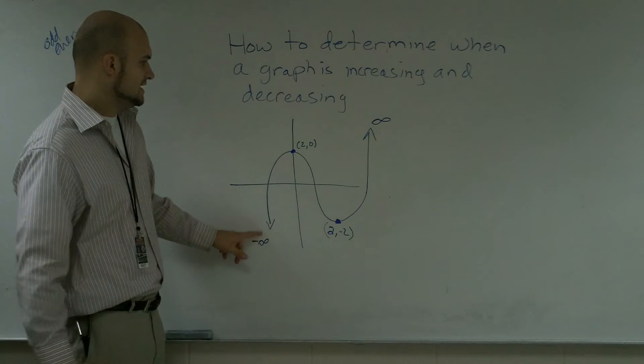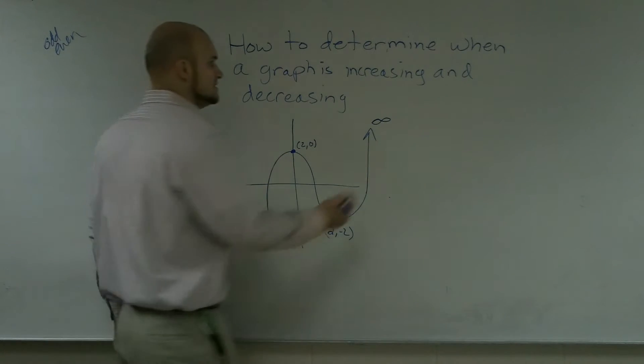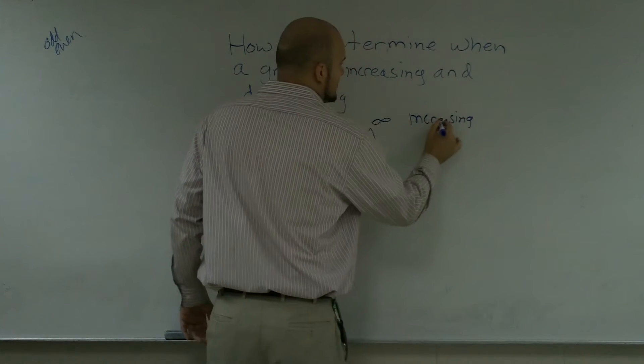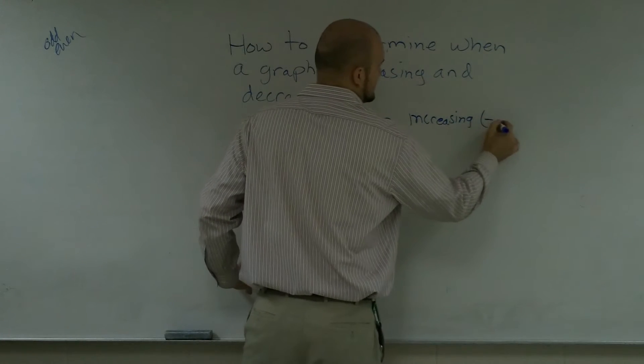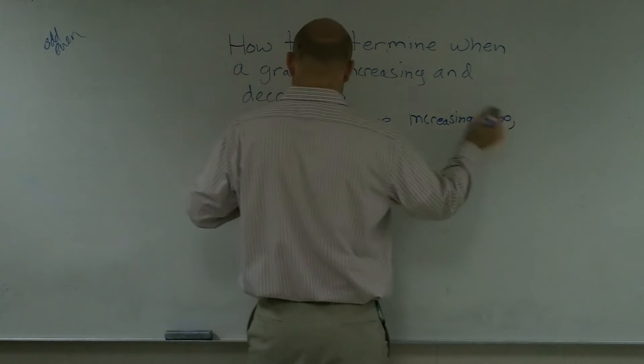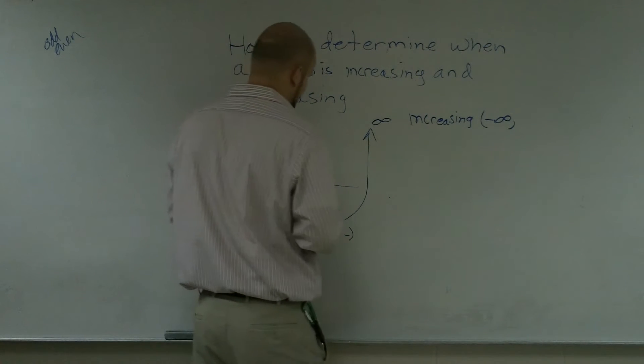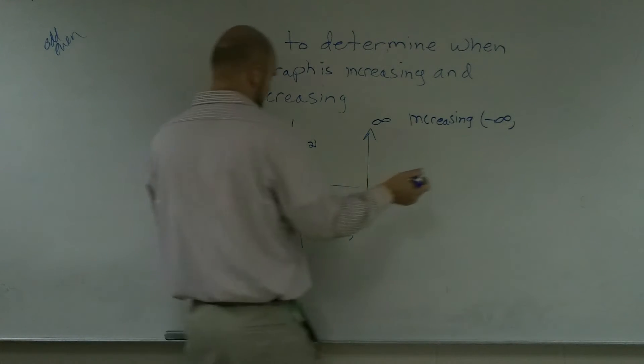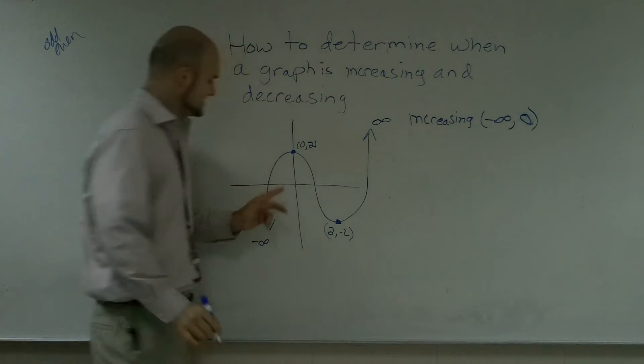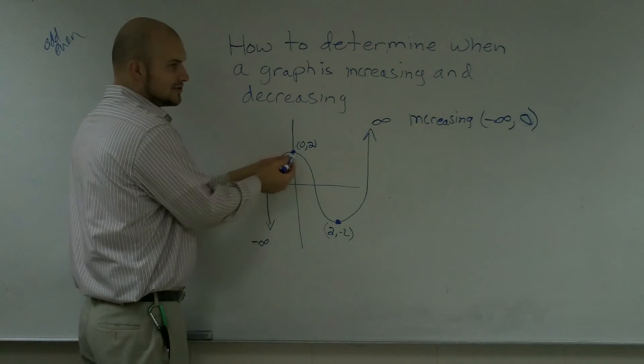I notice from negative infinity my graph is increasing. I'm going to write increasing from the x values of negative infinity to... that's not the correct point. Sorry, I rewrote the point wrong. Zero. It's from negative infinity to zero. That is where this graph is increasing.